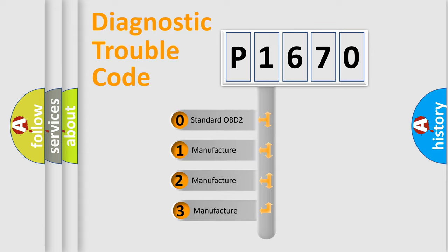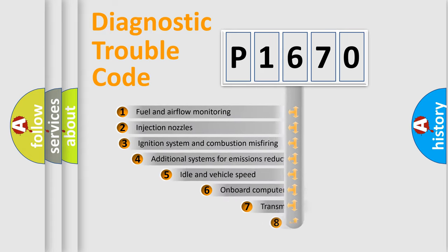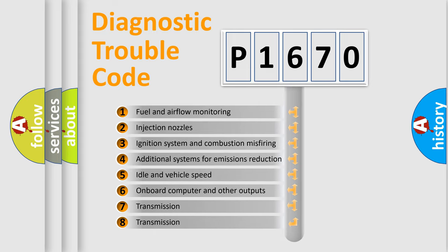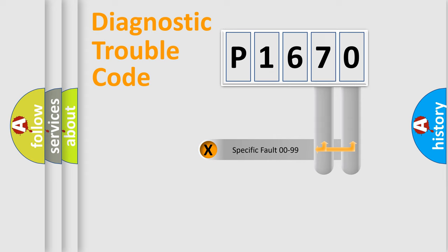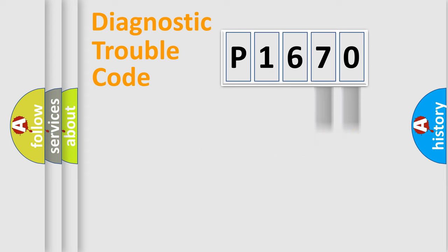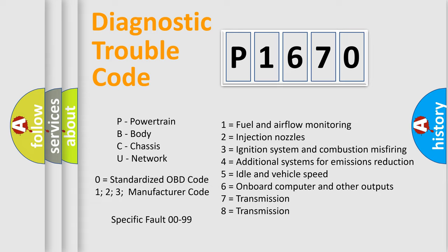If the second character is expressed as zero, it is a standardized error. In the case of numbers 1, 2, or 3, it is a more specific expression of a car-specific error. The third character specifies a subset of errors. The distribution shown is valid only for the standardized DTC code. Only the last two characters define the specific fault of the group. Such a division is valid only if the second character code is expressed by the number zero.